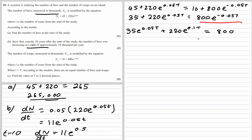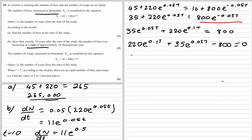So e^(0.1t) is like the x² term — we multiplied through by e^(0.05t), so e^(0.05t) times e^(0.05t) = e^(0.1t). We've got a quadratic. Rewriting equal to zero by subtracting 800 from both sides, we identify: a = 220, b = 35, c = −800.